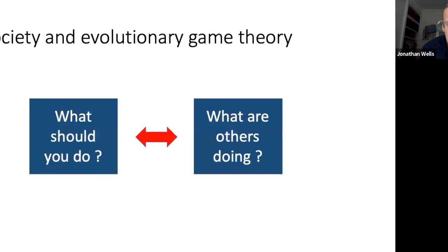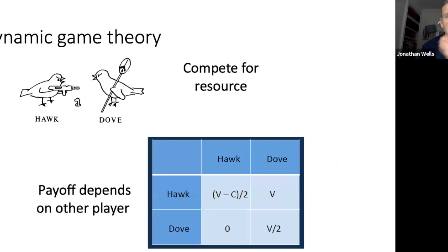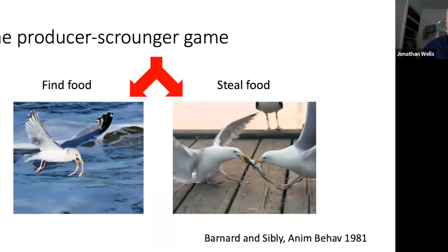When studying society from an evolutionary perspective we draw on game theory. The basic principle is that what we should do at any time depends on what others are doing — society unfolds dynamically like a chess game. You may know the hawk-dove game, where hawks use violence to get a resource and doves do not. A hawk generally does better than a dove, but when two hawks interact they may both be injured. Since humans don't fight all the time for food, we need a different kind of dynamic game.